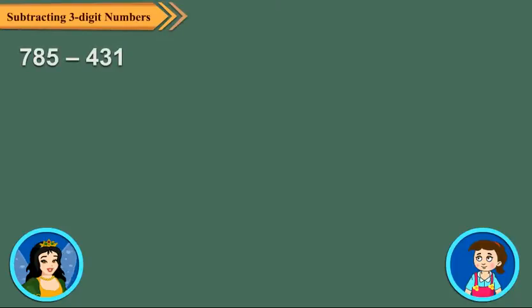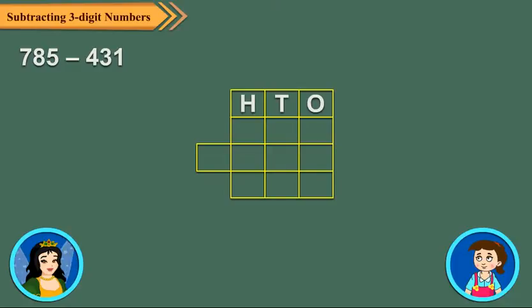So let us now subtract 431 from 785. Arrange the numbers in columns. Now subtract the ones digits. 5 ones minus 1 one is equal to 4 ones. Then subtract the tens digits.